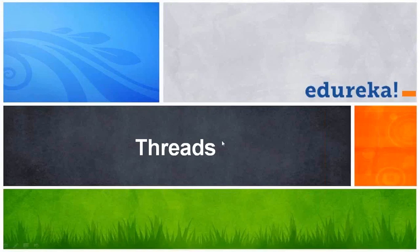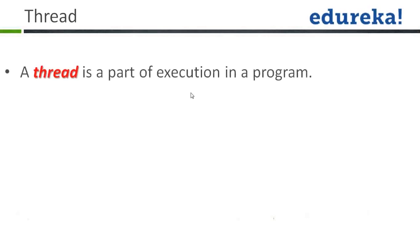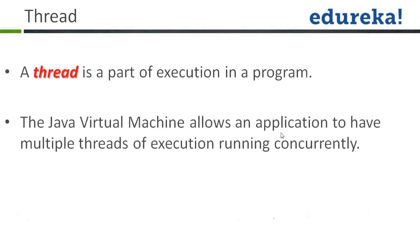In today's class we'll be going through threads. The previous classes we learned HashMap, HashTable, and ArrayList. Now we'll move further and go through threads. First of all, what is a thread? A thread is a part of execution in the program. The Java Virtual Machine allows an application to have multiple threads of execution running concurrently, so that you can get the multitasking feature available in your application.